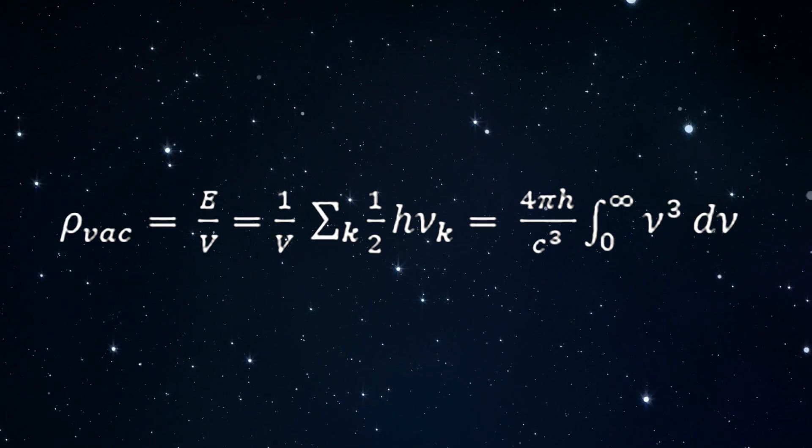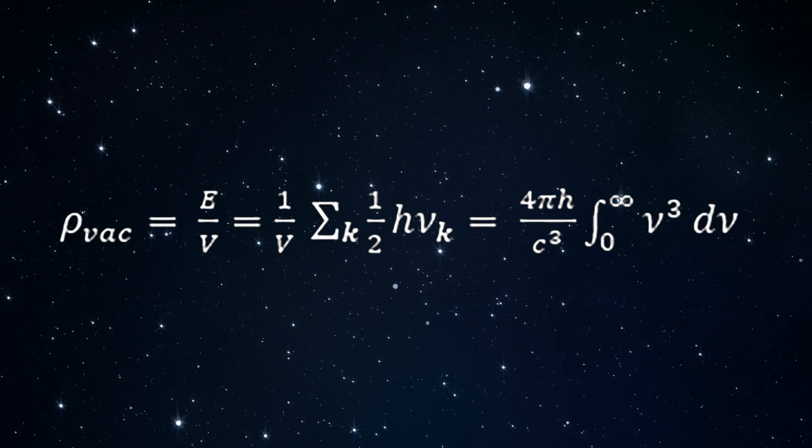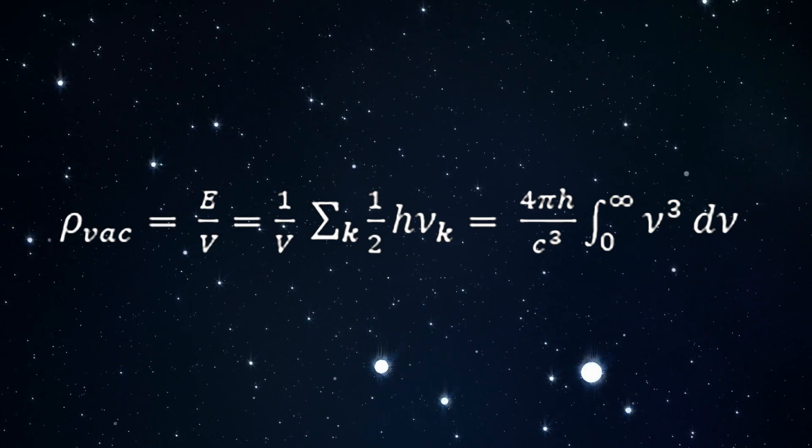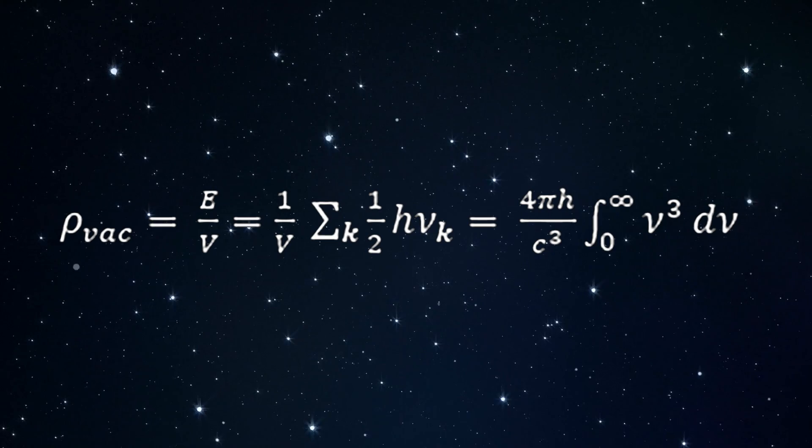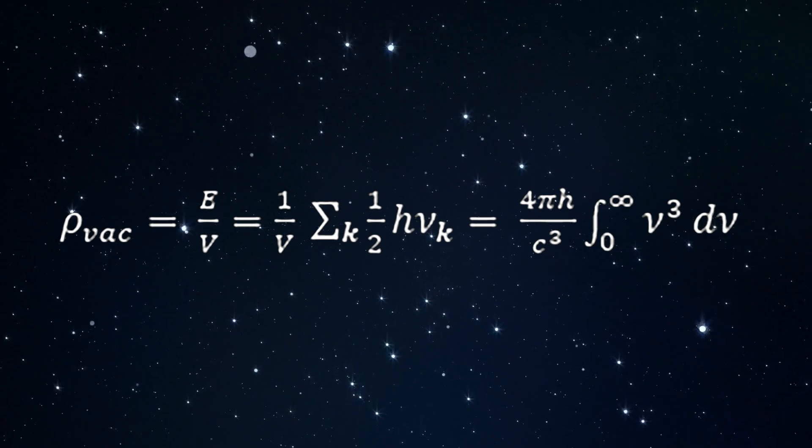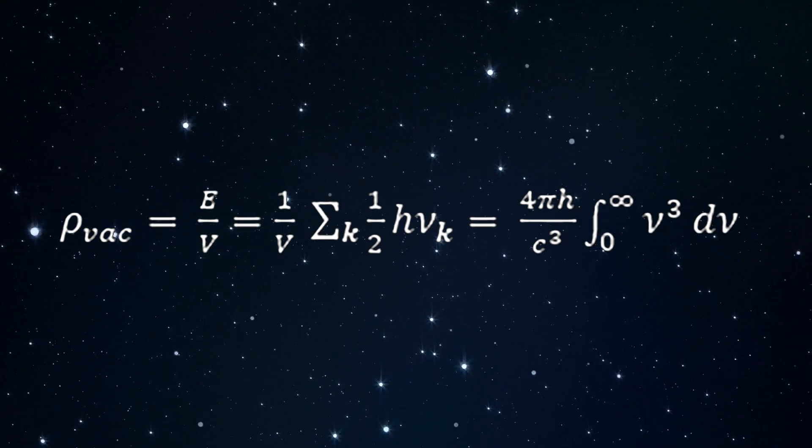We can remove the infinity by replacing the upper limit of the integral by a cutoff frequency set by the Planck scale, but this still results in a huge vacuum energy by 120 orders of magnitude.